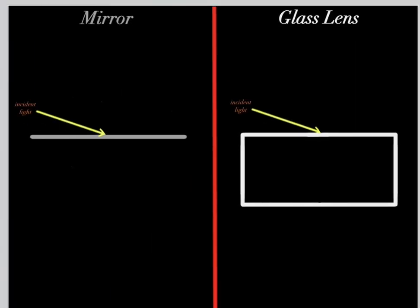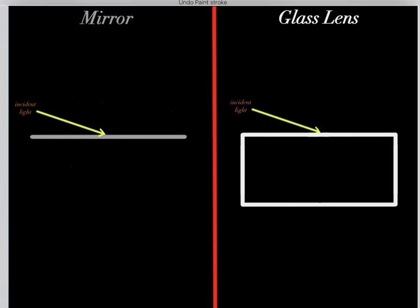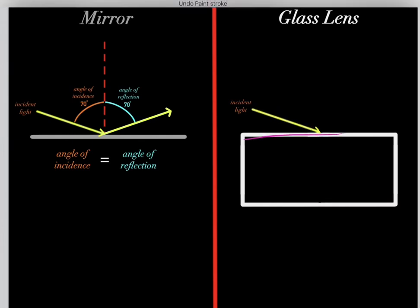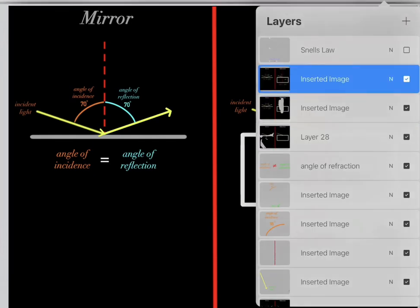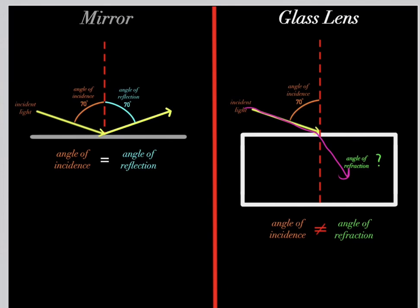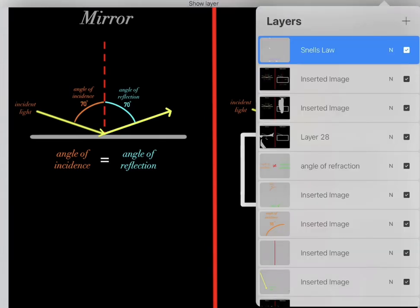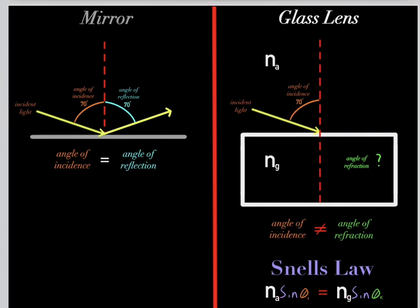To summarize: if an incident ray of light hits a mirror, we know mirrors reflect light, and we know the angle of incidence always equals the angle of reflection, so we can predict how the ray will be reflected. However, if an incident ray of light hits a glass lens, it will be refracted into the lens, but what will the angle of refraction be? To determine that, you need to use Snell's law, where you need to know the index of refraction of the air and the glass. In the next video we are going to learn about Snell's law, and I have a link to that video below.